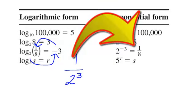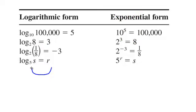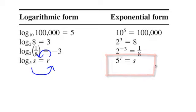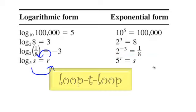One more: 5 to the r equals s. And in exponential form it is written just like that. So if I'm in logarithmic form and want to convert to exponential form, I can use my formula or the loop-to-loop.